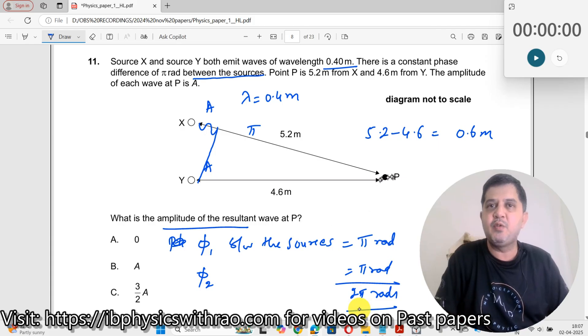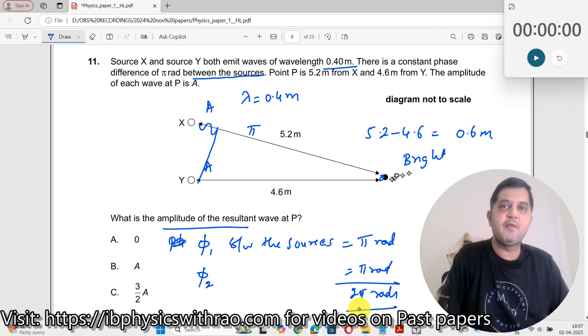As a result of it, what kind of wave do I get here? You will always get a bright fringe. What is the intensity of this bright fringe or what is the amplitude of it?